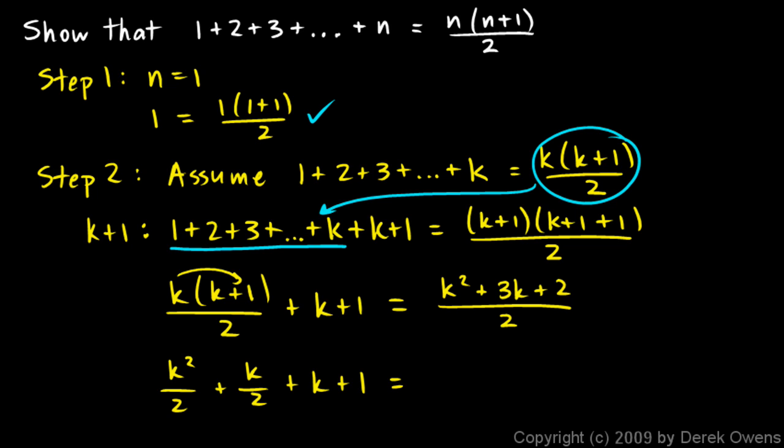And then on the right, if we break this up into pieces, we have k squared over 2 plus 3k over 2 plus 2 over 2, which is 1, and this works. K squared over 2, the k squared terms are the same, the 1 is the same on each side, and this k over 2 plus k is 3k over 2.